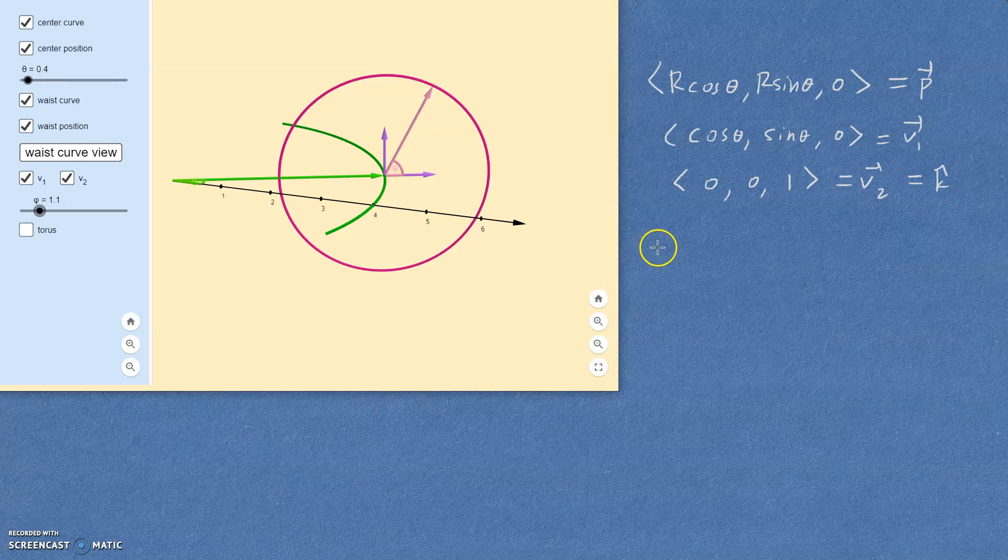So we have our answer. To parameterize this torus, we're going to be looking for points that look like this: P will get you out to that center of the circle and then we should add on to that a little r times the cosine of the angle that we're calling phi here times v1 plus a little r times the angle that we're calling phi times v2. And there you go. That is the parameterization for that.